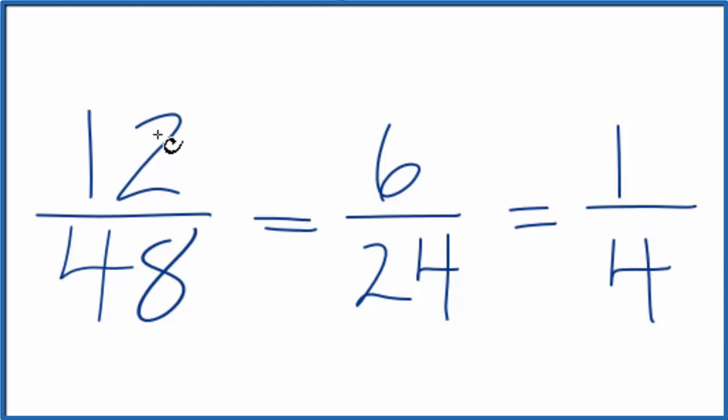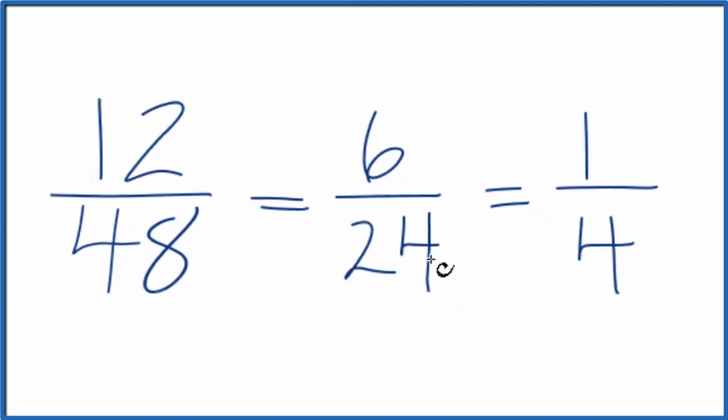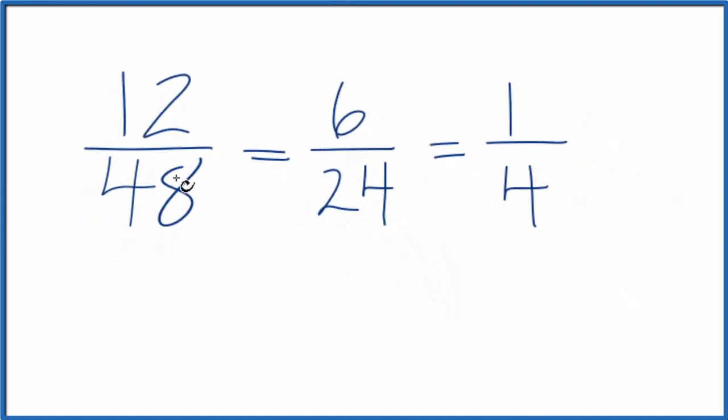so we've simplified the fraction 12/48 down to 1/4. All of these are equivalent fractions. If you divide 12 by 48, you get 0.25. If you divide 6 by 24, you get 0.25. And if you divide 1 by 4, you get 0.25. So they're the same value. They're equivalent,